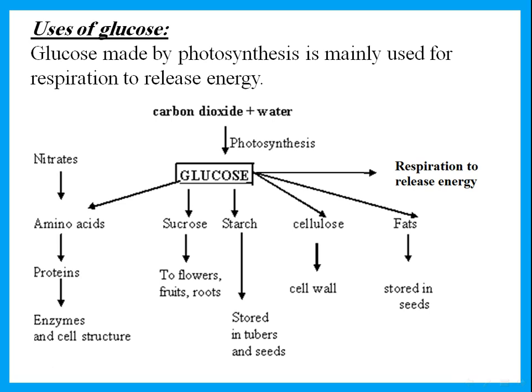Glucose can be converted to sucrose and sent through the phloem to other parts of the plant — to the flowers, to the fruits, to the roots. Or we can store any excess glucose. Excess glucose is stored in the plant in the form of starch, and this can be stored in the seeds, in the leaf, or any part of the cell. Glucose is also converted to cellulose, or it can be converted to fats and stored in the seeds.